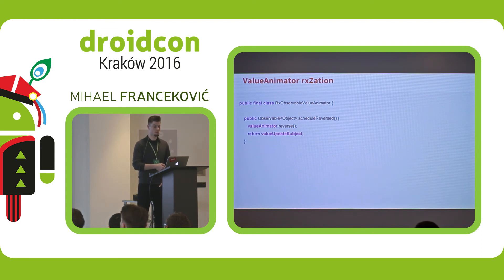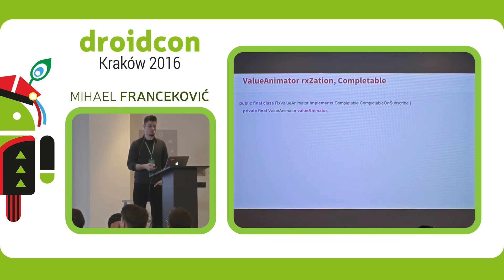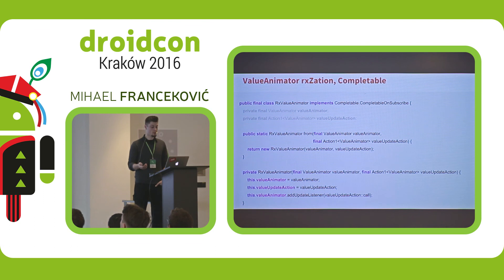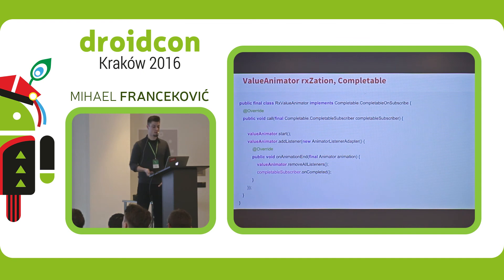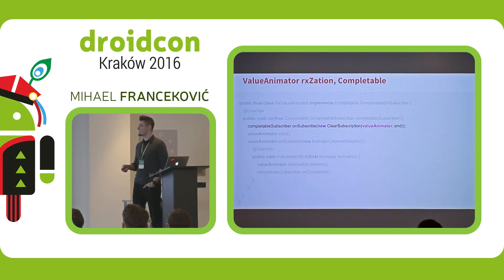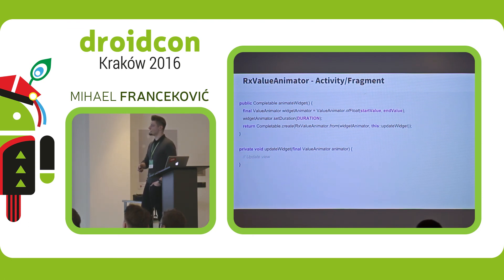We can also schedule a reverse animation for the end. We can wrap it up in a Completable if our presenter only cares about the end. Using CompletableOnSubscribe, we get the ValueAnimator, pass the ValueAnimator action that is called when a value comes from the ValueAnimator, and when it subscribes, we start it with a new listener that calls onComplete on it. It's important to clear our ValueAnimator on unsubscribe, because if our view gets removed and we try to animate something on it, we could crash. This is how our activity fragment looks like: we create the ValueAnimator with start value, end value, interpolation, and wrap it up. The presenter starts it, we want to end it, and we update the widget in the updateWidget function.